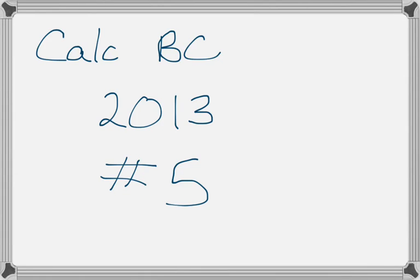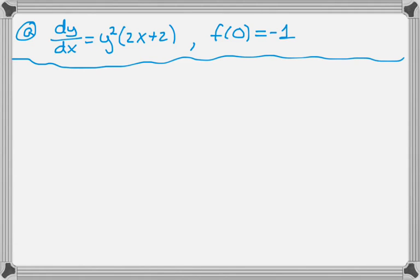Alright, this is number 5 from the 2013 Calc BC exam, and it is ultimately a separable differential equation problem. But first of all, we're going to use it to do a couple things. So we're given dy/dx, and we're told that f(0) = -1.